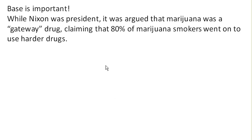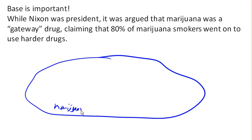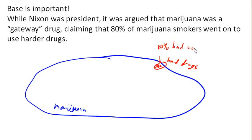Now it turns out this isn't true. Here is the world of marijuana smokers, and here is the world of hard drug users. What is actually true is that of the hard drug users, 80% of the hard drug users had used marijuana. But it's not true that 80% of the marijuana users had used hard drugs.